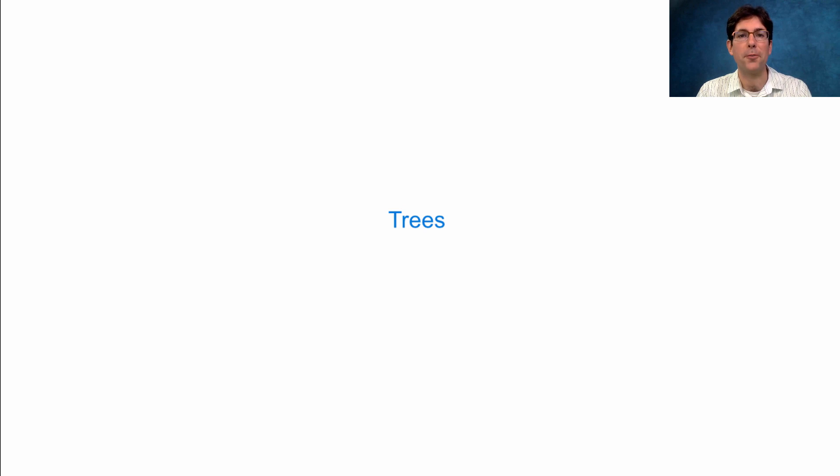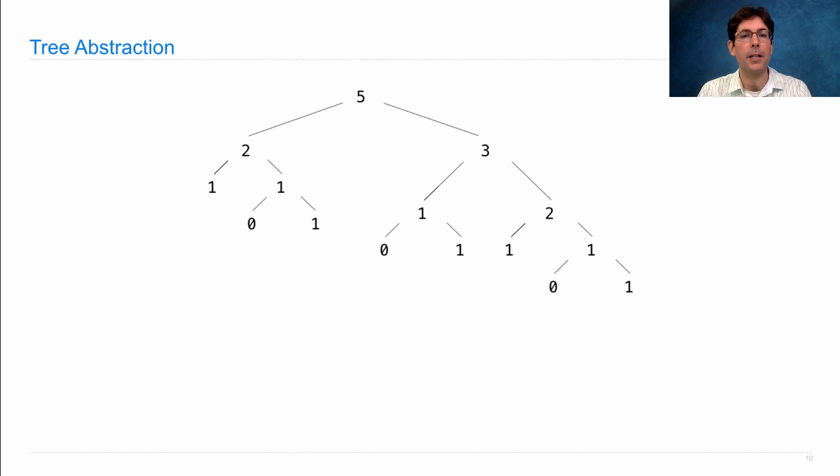Trees are another important abstraction. The tree abstraction is used to represent hierarchical structures like this one. This is called a Fibonacci tree because at each point we have a Fibonacci number. 5 is made of 2 and 3, 2 is made of 1 and 1, etc.